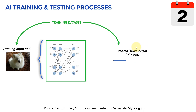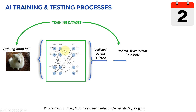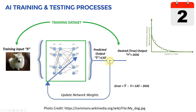Think of it as a little kid who doesn't know anything yet — I'm teaching that kid how to walk by showing them the inputs and the correct output. Similarly, I show the network an image of a dog and the desired label. Because this brain hasn't learned anything yet, it will initially predict something like 'cat' — the predicted output y-hat is wrong. So we calculate the error, which is the difference between what the model predicted and what we actually want.